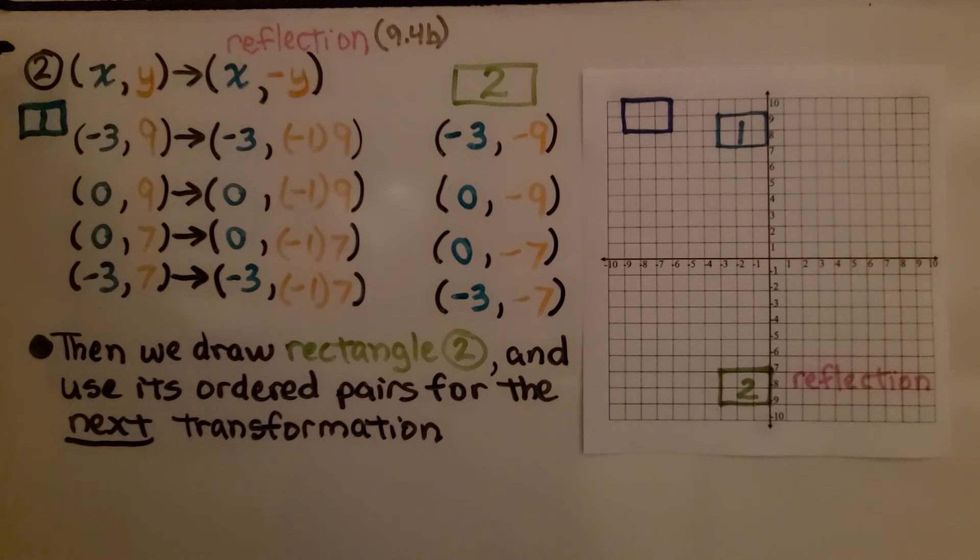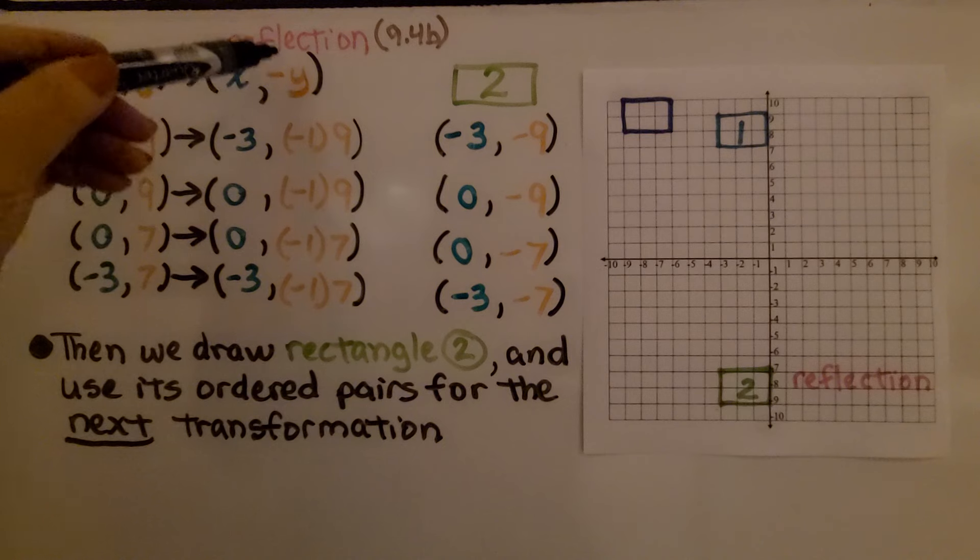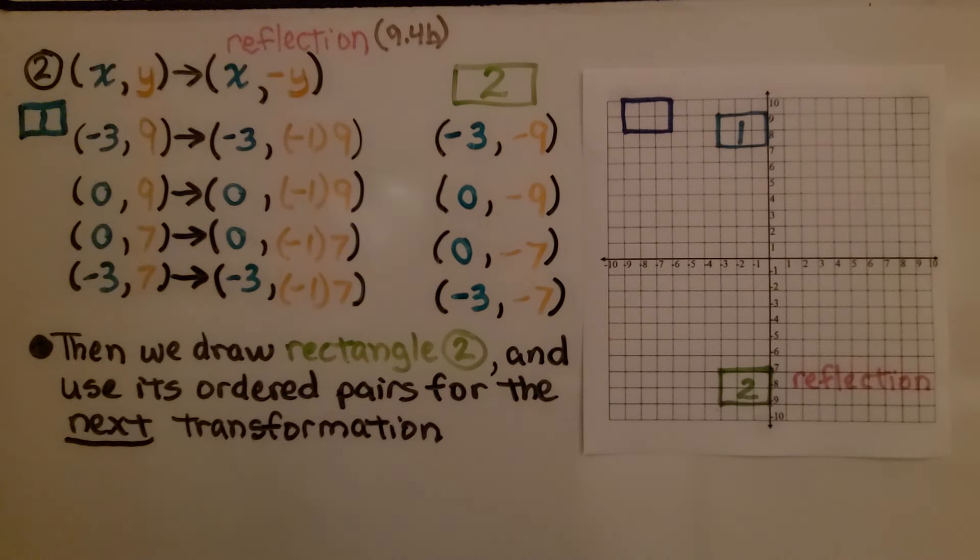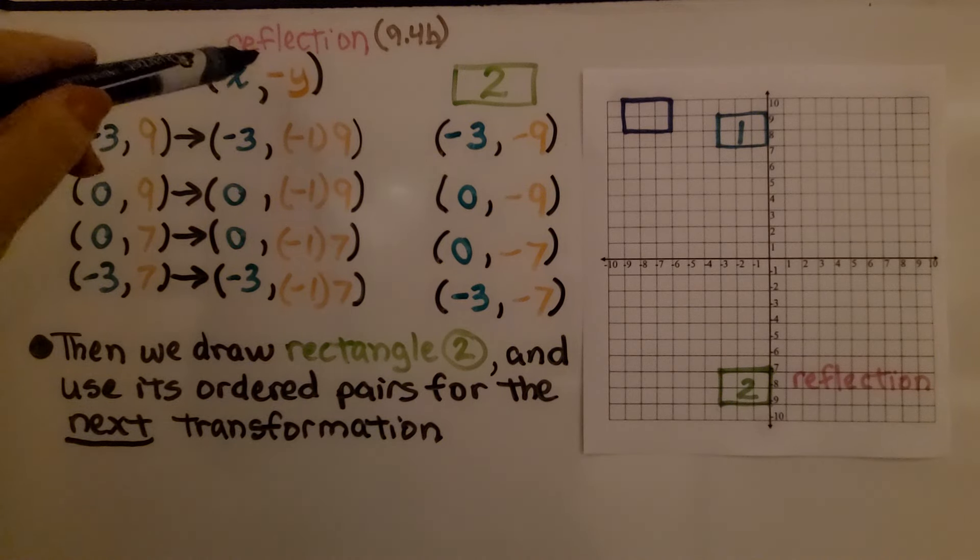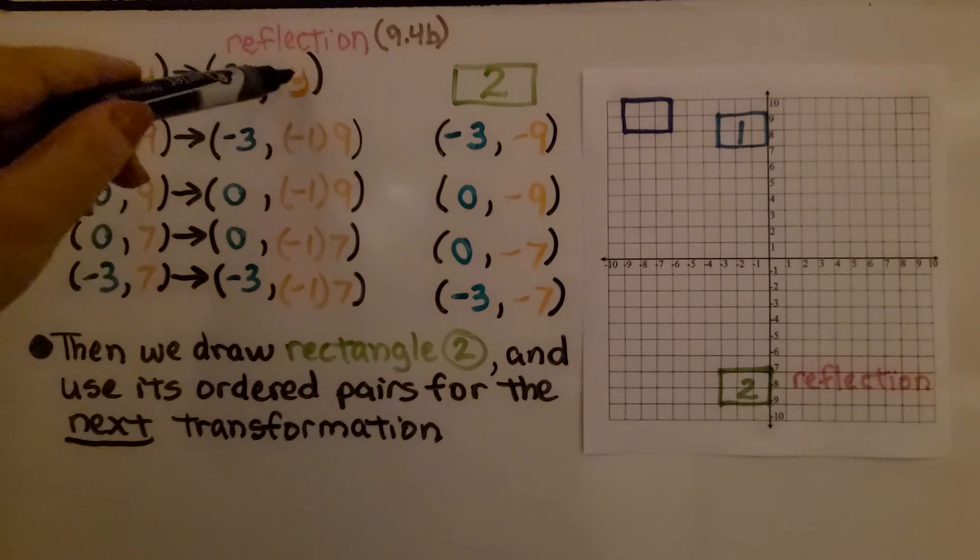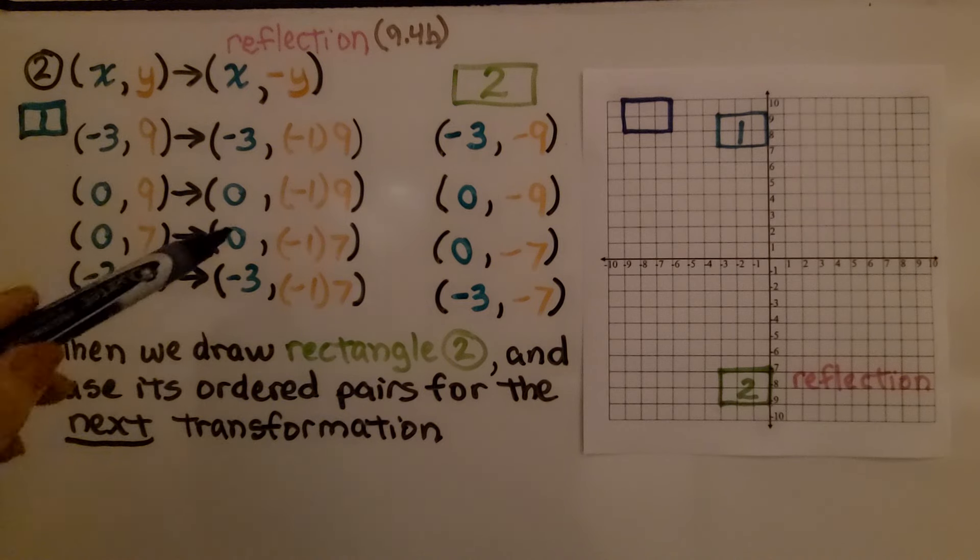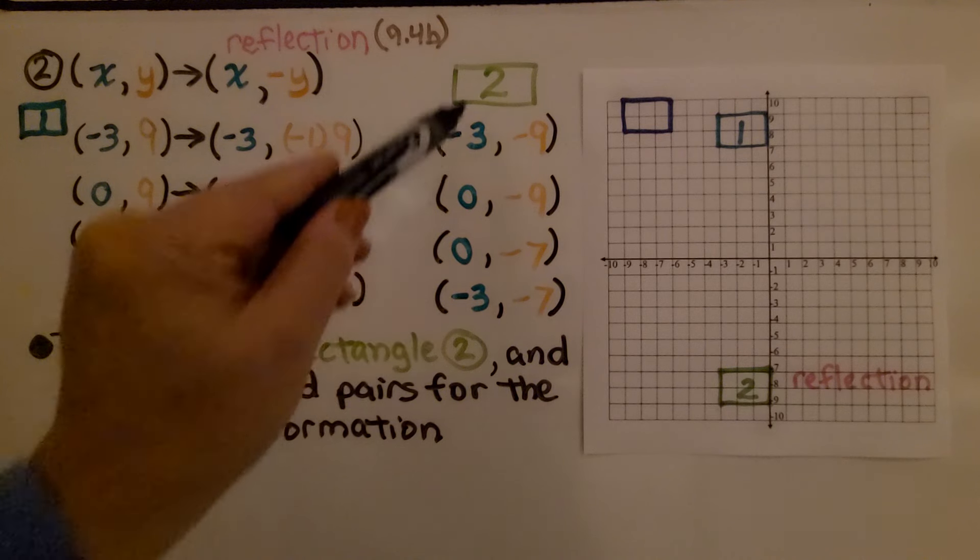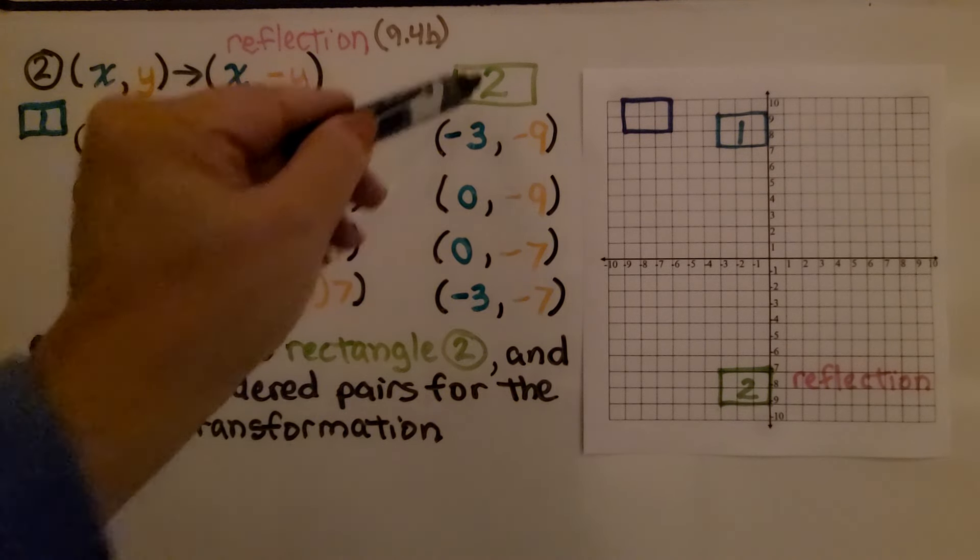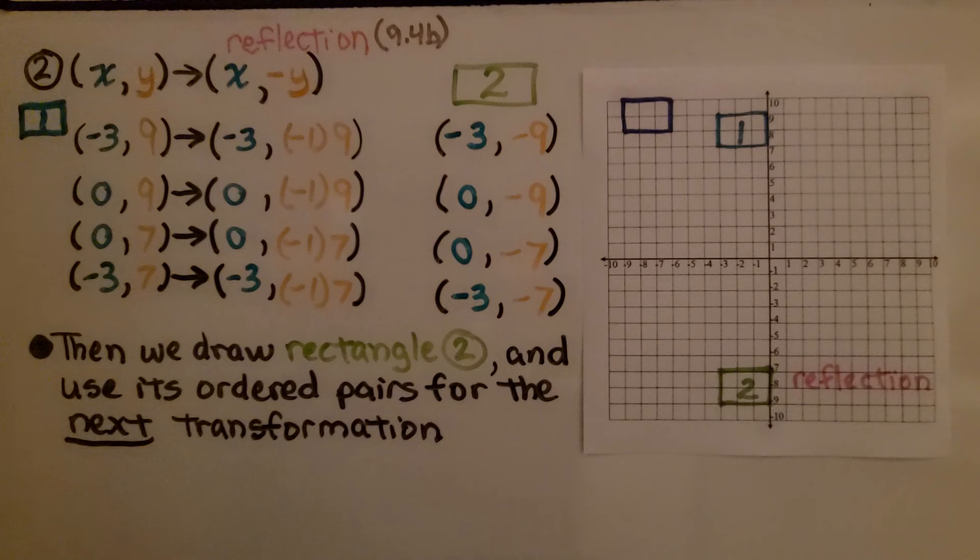We have our second transformation, and it's saying the x, y values are going to map to x negative y. Well that's a reflection, and that video 9.4b will be linked in the description also if you need a refresher. We're going to apply multiplying negative 1 to every y value from this first green rectangle. We do, and we get the ordered pairs for the second transformation.